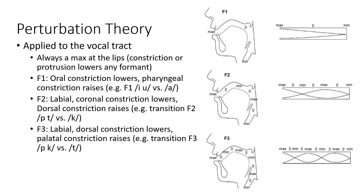For F1, there's a maximum at the lips and a crossover point about halfway through the vocal tract, around the velopharyngeal port. Any constriction in the oral region will be where there's higher volume velocity — closer to that max — and so that will lower the corresponding formant. For example, our high vowels like E and OO have a lower F1 compared to our low vowels like AH, and that is consistent with perturbation theory.